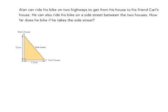Alan can ride his bike on two highways to get from his house to his friend Carl's house. He can also ride his bike on a side street between the two houses. How far does he bike if he takes the side street?